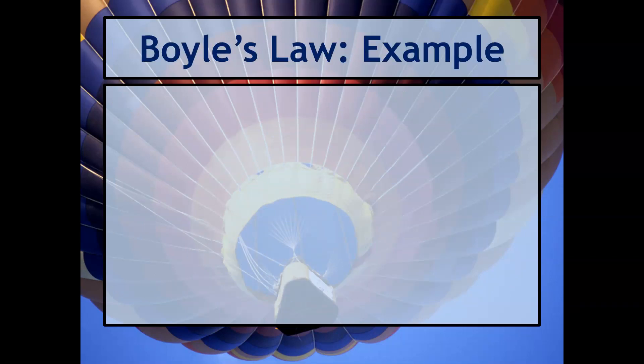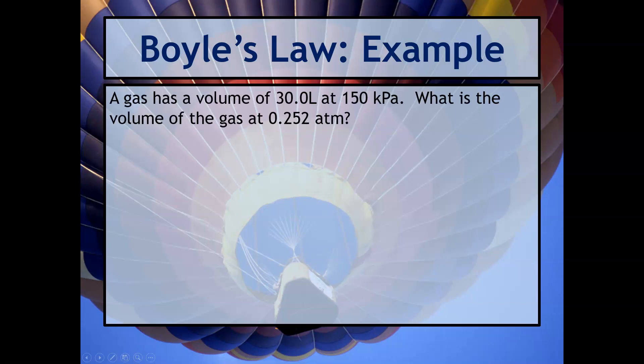Here's an example. It says a gas has a volume of 30 liters at 150 kilopascals. What's the volume of the gas at 0.252 atm? A strategy that I really like is I like to list out all the variables that I have in the problem. You can see you're relating volume and you're relating pressure, so that means we must be using Boyle's law. We're going to write out P1, V1, P2, and V2 and extract the information from the problem.